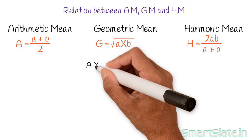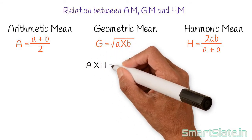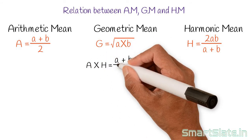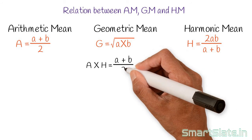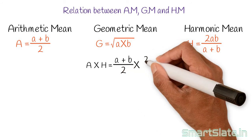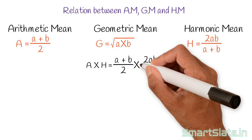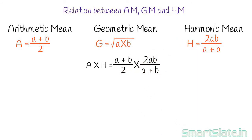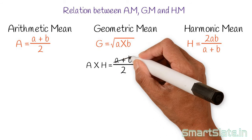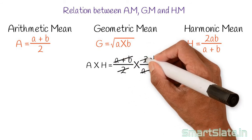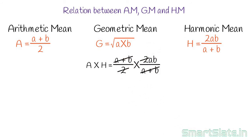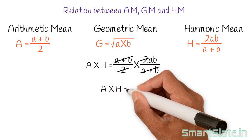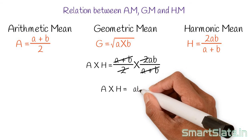Calculate a × h. It is (a + b) / 2 multiplied by 2ab / (a + b). After simplifying, we get a × h = a × b.